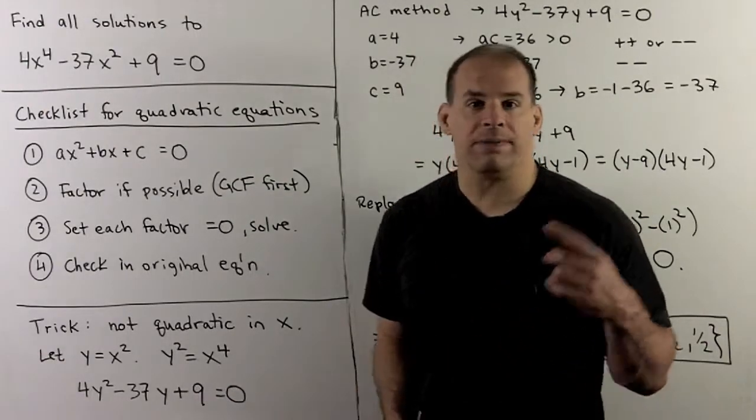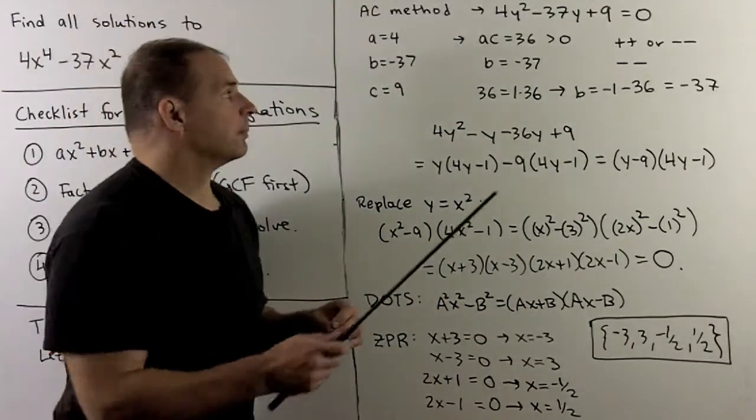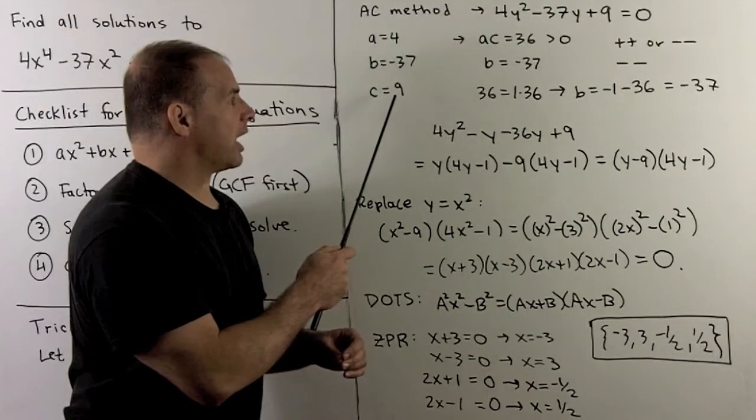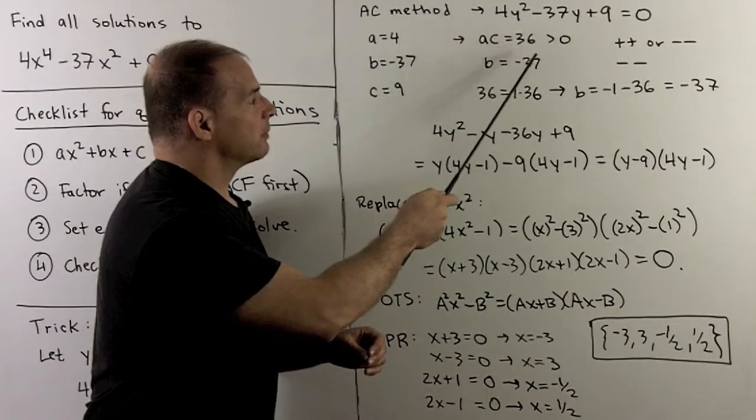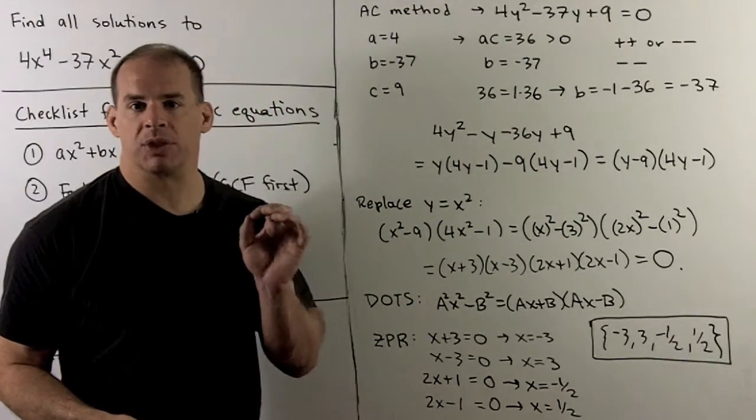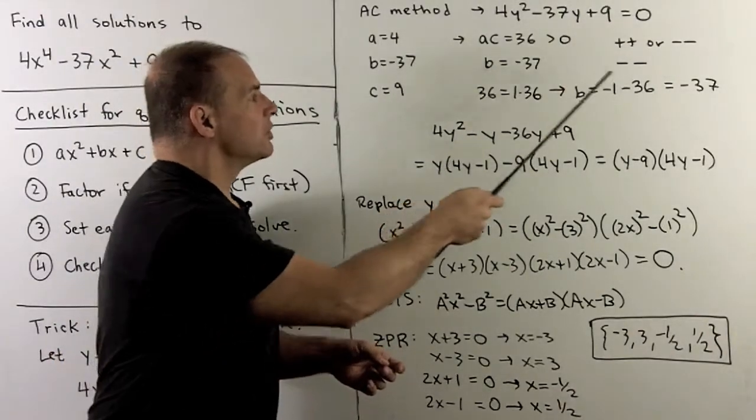Now, I want to factor the left-hand side. So, I can use the AC method. If a equals 4, b is minus 37, c is equal to 9, a times c is 36, that's positive. So, the sign pattern for how we split b is plus plus or minus minus. b is negative, so it's minus minus.